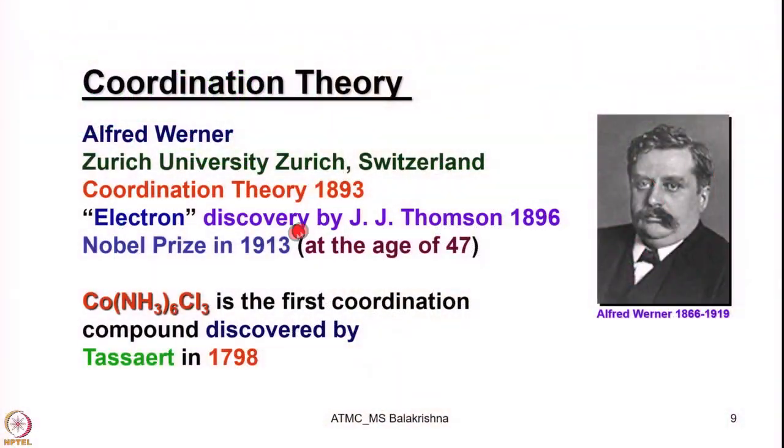Coordination theory is synonymous with Alfred Werner. As I mentioned, at the age of 29 he became full professor of chemistry at Zurich University and started this pioneering work at the age of 26 when no instrumental facilities — whether analytical or spectroscopic — were available. Not only that, even atomic structure and electrons were not known. He proposed coordination theory in 1893 — recall that electrons were discovered by J.J. Thomson in 1896 — and for this painstaking work he was awarded the Nobel Prize in 1913 at the age of 47.